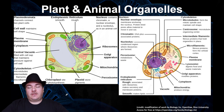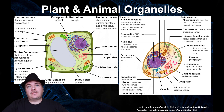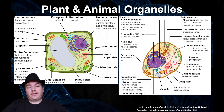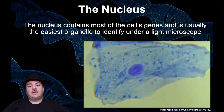Animal cells and plant cells have a lot of the same organelles. In fact, the main difference is that plant cells have a few extra things that animal cells don't have. But we're going to go through each of the organelles one at a time. To begin with, we're going to start discussing the nucleus.